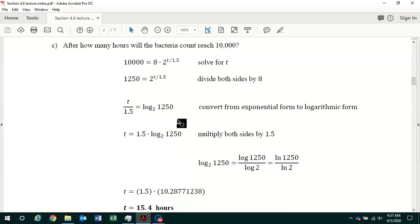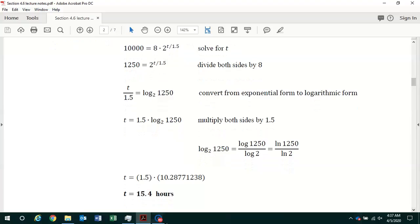In solving for t, we multiply both sides by 1.5 and we have t equals 1.5 times log base 2 of 1,250. If you have the software on your calculator, you can just type in 1.5 times log base 2 of 1,250, and when you round to the nearest first decimal, you get t equals 15.4 hours.